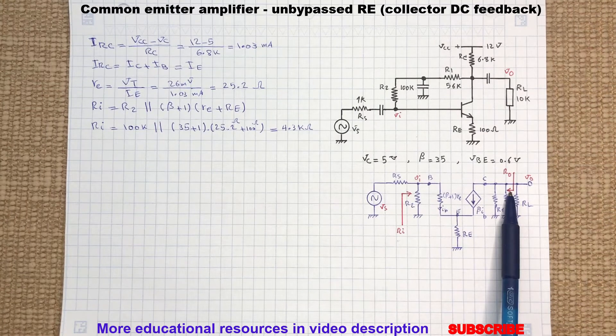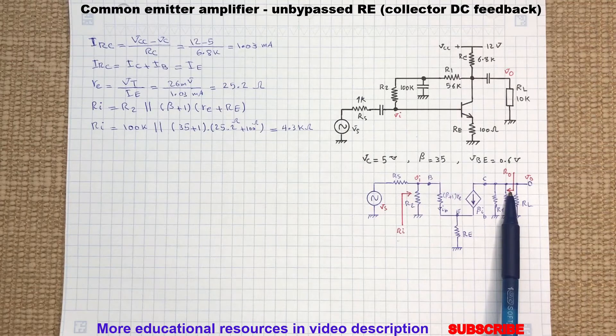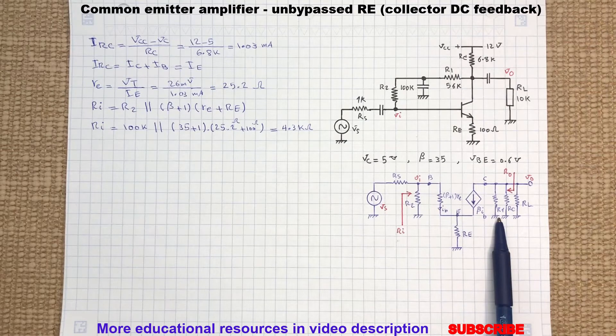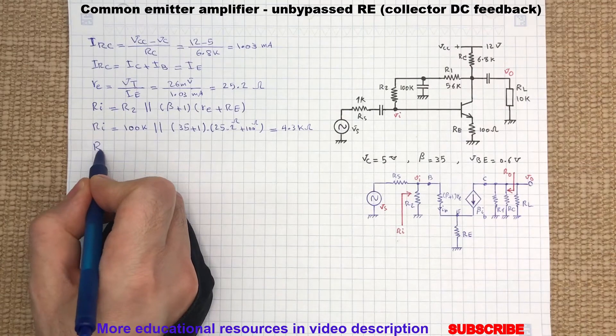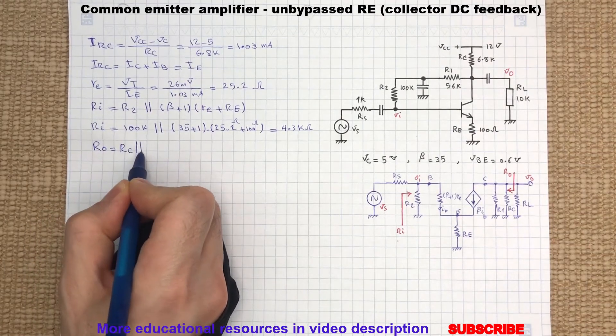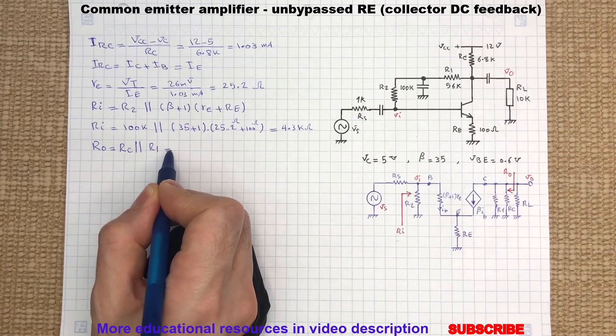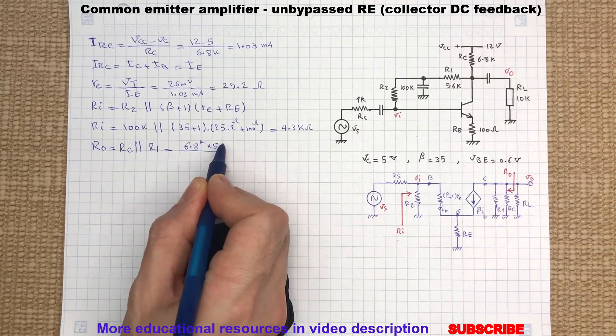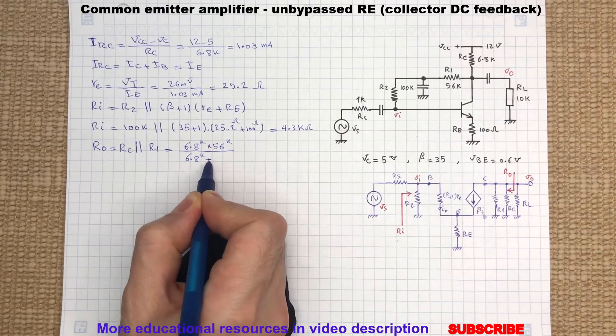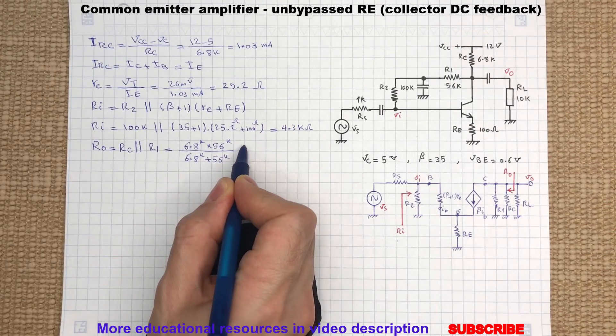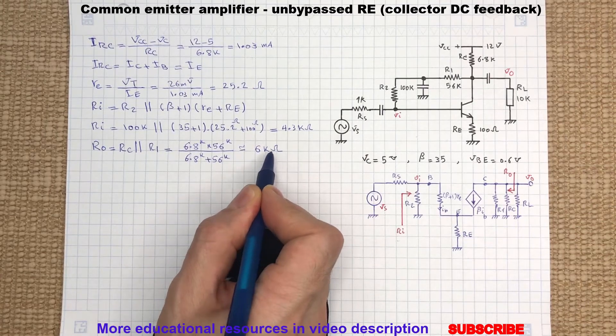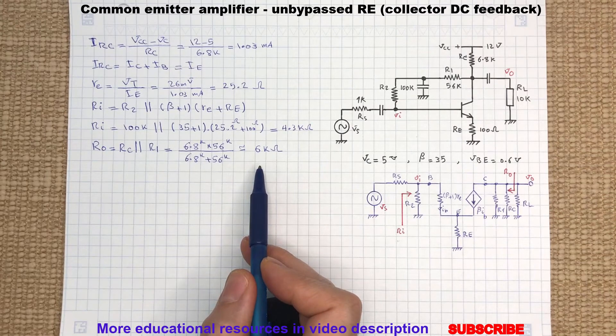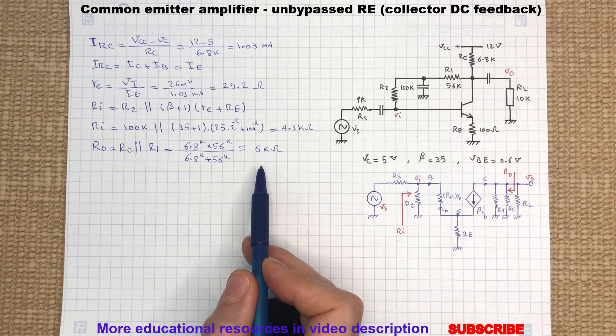We will determine the output resistance by looking from the load resistor RL terminal. In this case we can see that the resistor RC and R1 are in parallel. So we can write... This will be slightly less in practice because we didn't consider the collector emitter dynamic resistance.